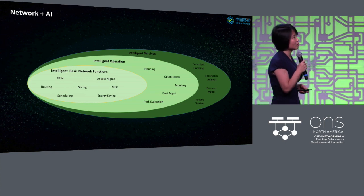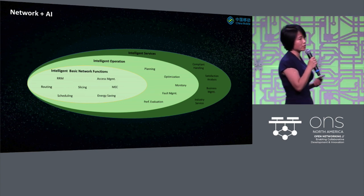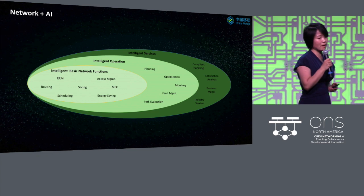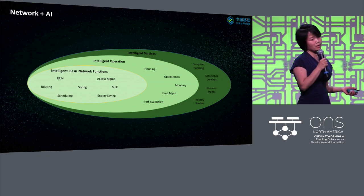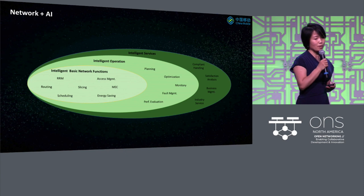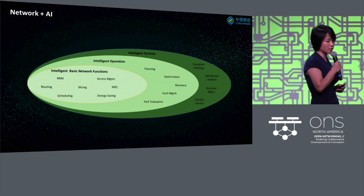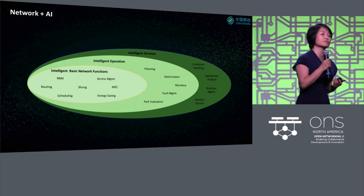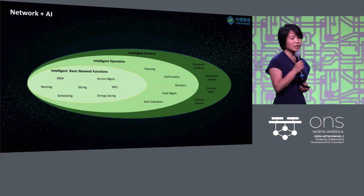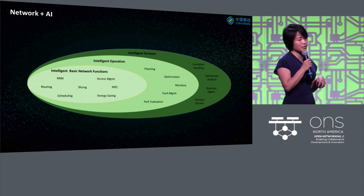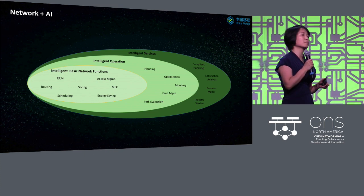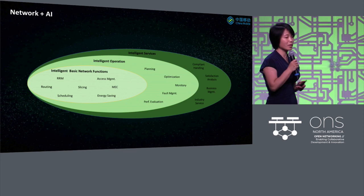For network intelligence, we're putting it into three layers. The outer circle is the intelligence service layer — for example, business management, industry services, and how we improve user satisfaction.